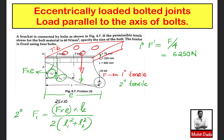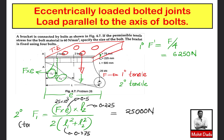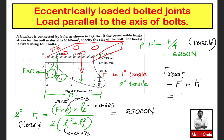Substituting values: F = 25 kN, e = 500 mm (0.5 m), l₂ = 225 mm (0.225 m), l₁ = 75 mm (0.075 m). Solving gives the secondary tensile load as 25,000 N or 25 kN. Since both primary and secondary loads are tensile, the resultant load = f' + F₁ = 6250 + 25000 = 31,250 N.